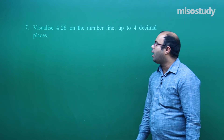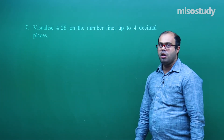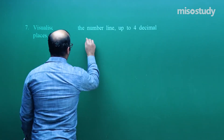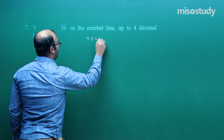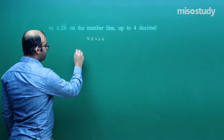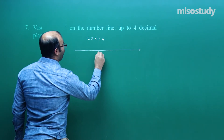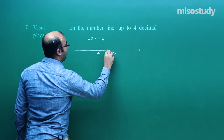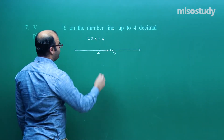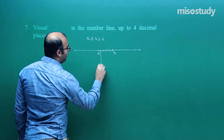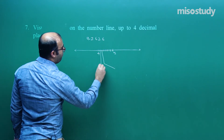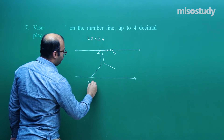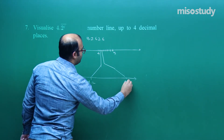Next question: visualize 4.26̄ on the number line up to 4 decimal places using the process of successive magnification. 4.26̄ = 4.2626... We take the number line, locate 4 and 5, divide into 10 equal parts. 4.2 is the second mark and 4.3 is the third. We magnify the portion between 4.2 and 4.3, writing 4.2 and 4.3 on a new number line. We identify 4.26 on this magnified line.